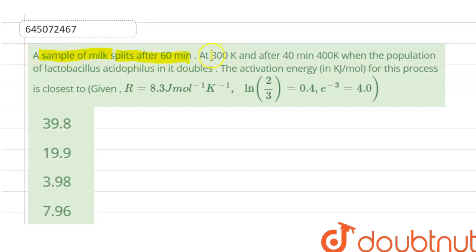Our question is: a sample of milk splits after 60 minutes at 300 Kelvin and after 40 minutes at 400 Kelvin when the population of Lactobacillus acidophilus in it doubles. The activation energy in kilojoule per mole for this process